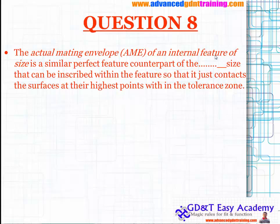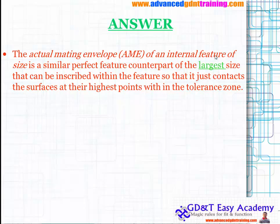Question eight: the actual mating envelope (AME) of an internal feature of size is a similar perfect feature counterpart of the smallest size that can be inscribed within the feature so that it just contacts the surface at the highest points. This is the largest size that can be inscribed.